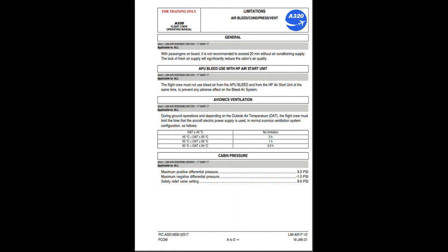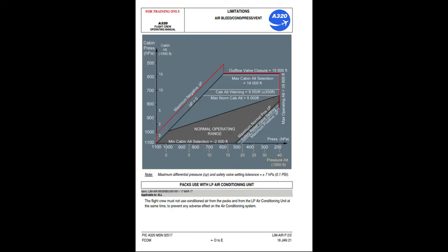Cabin pressure: maximum positive differential pressure 9.0 psi; maximum negative differential pressure minus 1.0 psi; safety relief valve setting 8.6 psi; outflow valve closure 15,000 feet; max cabin altitude selection 14,000 feet; max operating altitude 39,800 feet; cabin altitude warning 9,550 feet ±350 feet; max normal cabin altitude 8,000 feet; minimum cabin altitude minus 2,000 feet. Note: maximum differential pressure delta-P and safety valve setting tolerance equals ±7 hectopascals (0.1 psi).